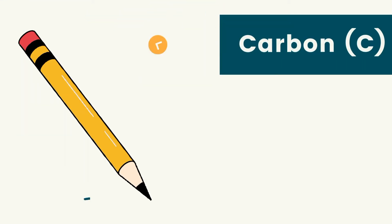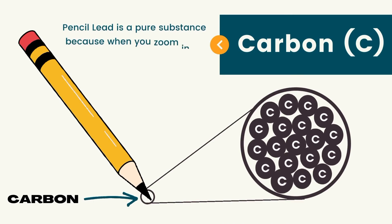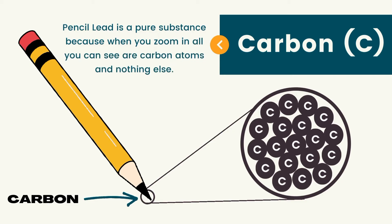I have here a pencil. At the tip of the pencil, we can see the element carbon that makes up our pencil lead. If we were to zoom in and look at our pencil lead, we can see that it contains only one type of atom, which is the carbon atom. Therefore, carbon is also a pure substance made up of only one type of atom — when you zoom in, all you see are carbon atoms and nothing else. All elements are pure substances.